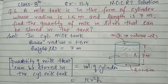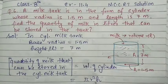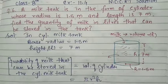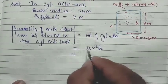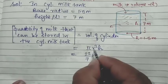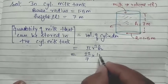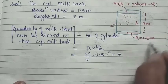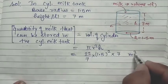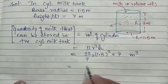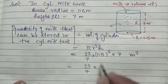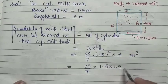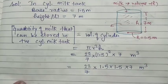Volume of cylinder ka formula hota hai: π r² h. Ab saari values rakh do. π ki value hai 22/7, r radius di hui hai 1.5 meter, aur h height hai 7 meter. So: Volume = 22/7 × (1.5)² × 7 meter cube. Aage solve karte hain: 22/7 × 1.5 × 1.5 × 7 meter cube.